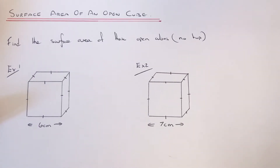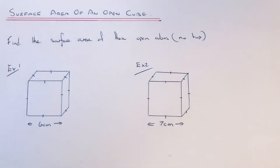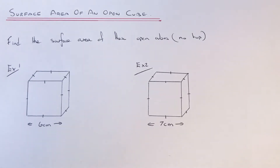Hi guys, welcome back. Today I'm going to show you how to work out the surface area of a cube which hasn't got a top face. This is called an open top box. So let's have a look at the two examples here.